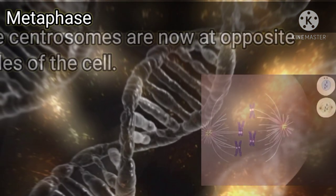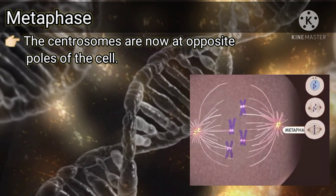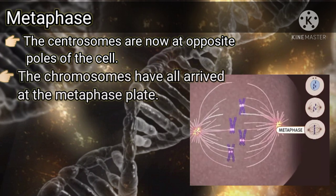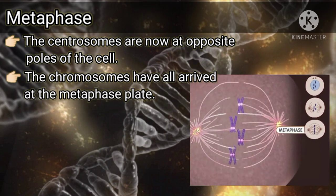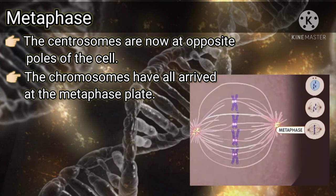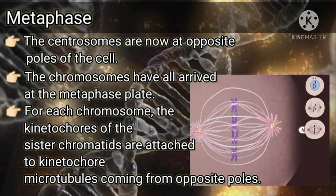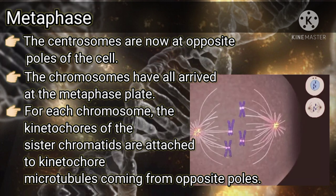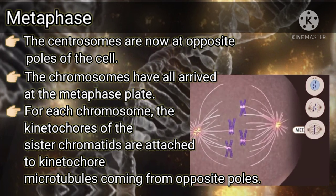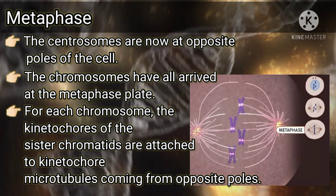In metaphase, the centrosomes are at opposite poles of the cell. All chromosomes have arrived at the metaphase plate, which is a plane equidistant between the spindle's two poles. For each chromosome, the kinetochores of the sister chromatids are attached to kinetochore microtubules coming from opposite poles.